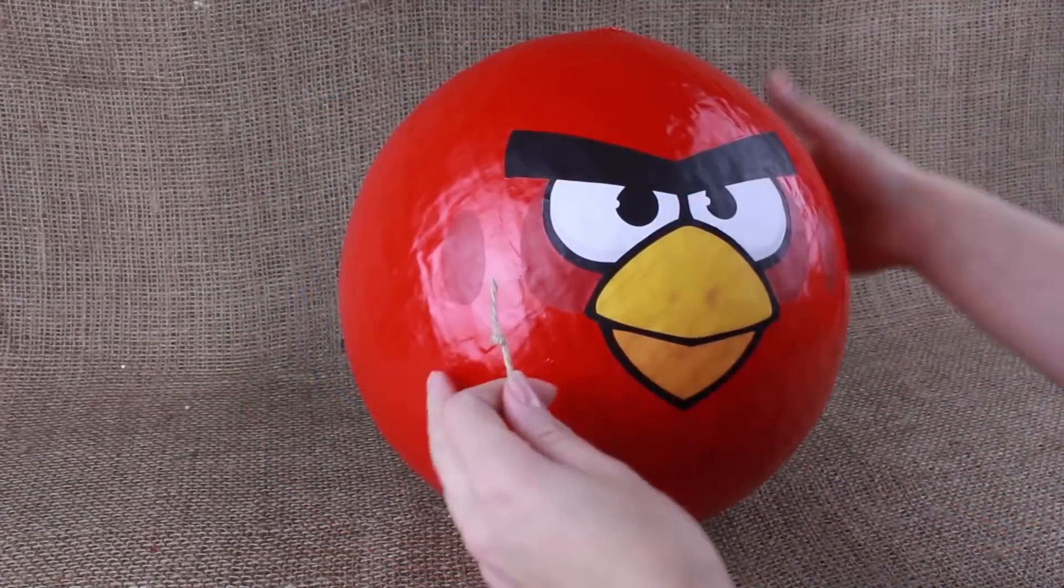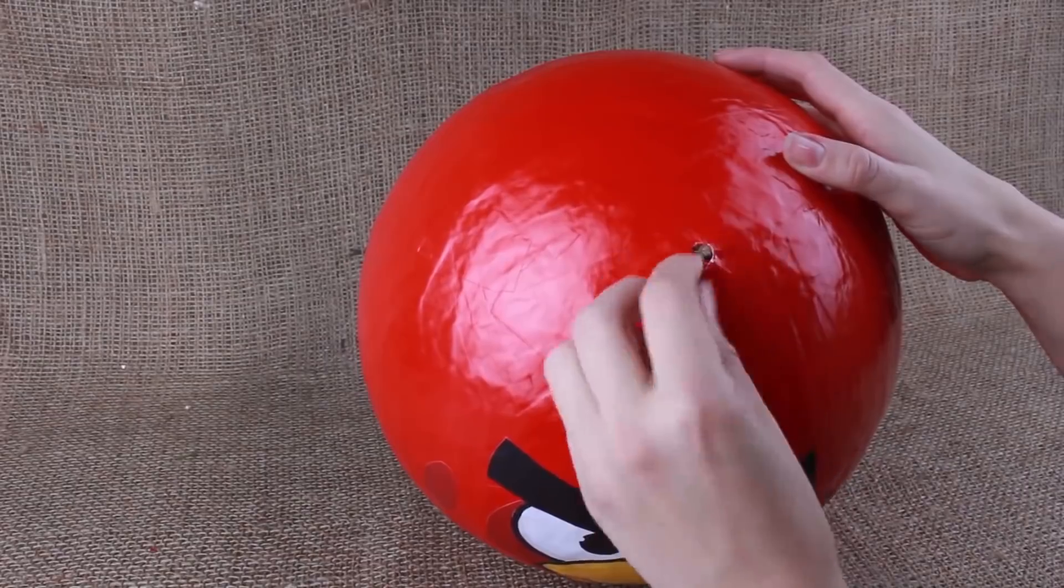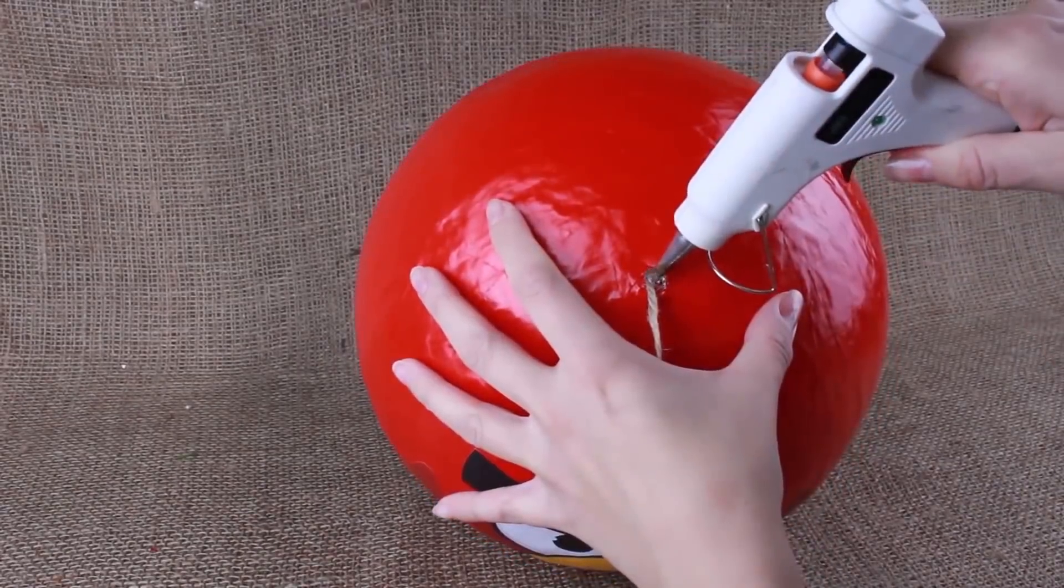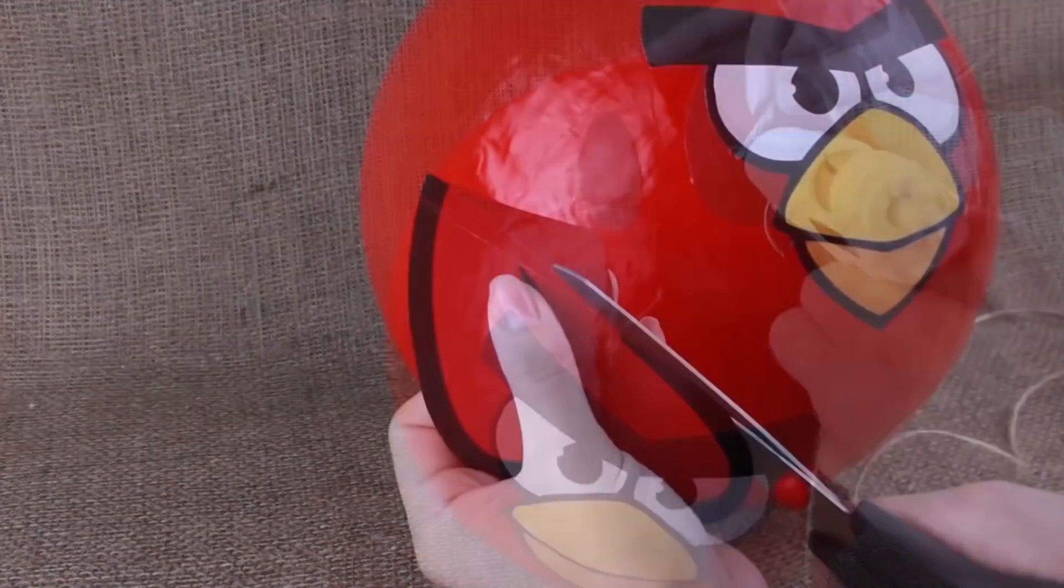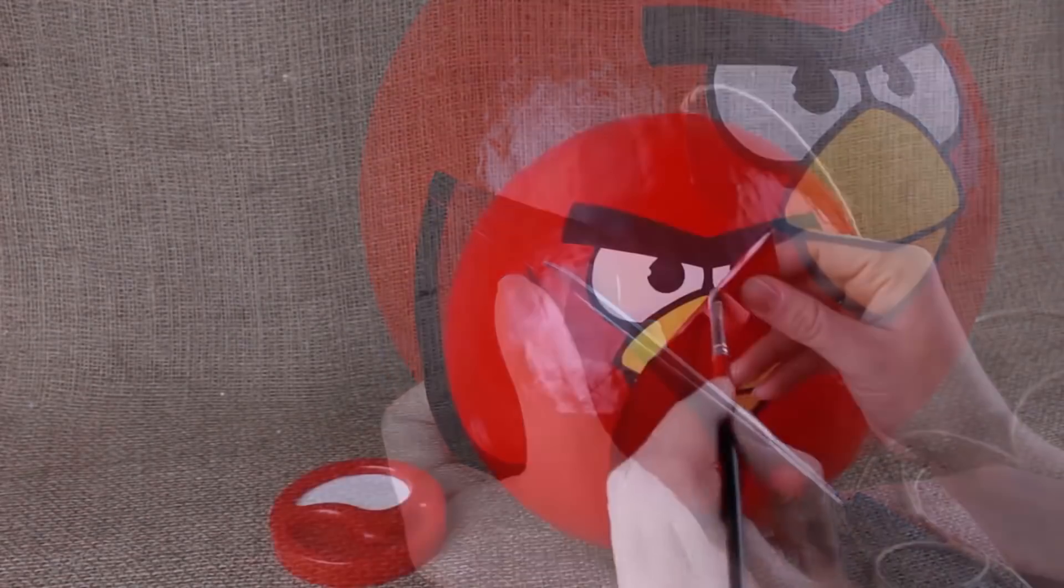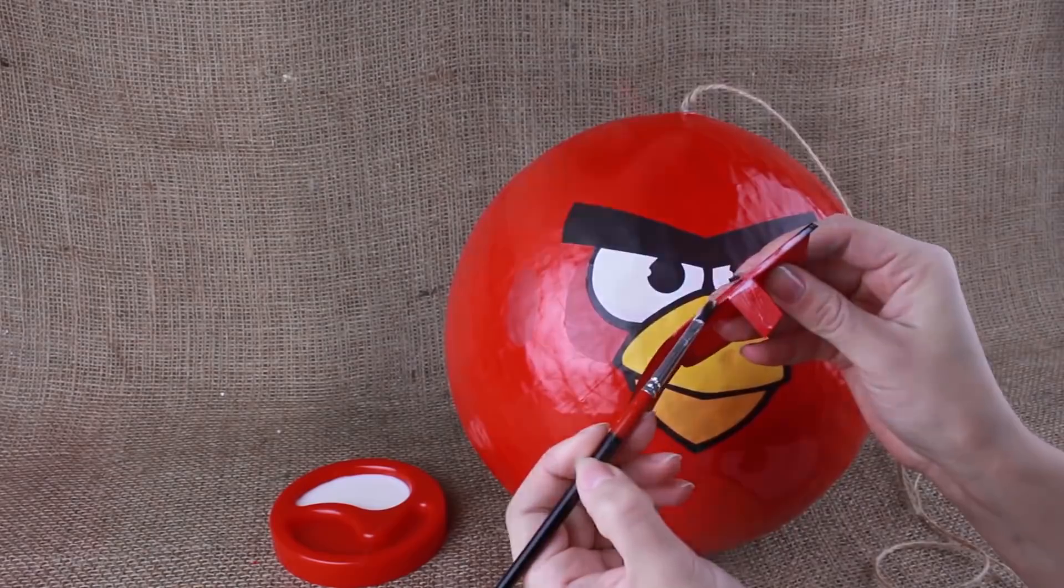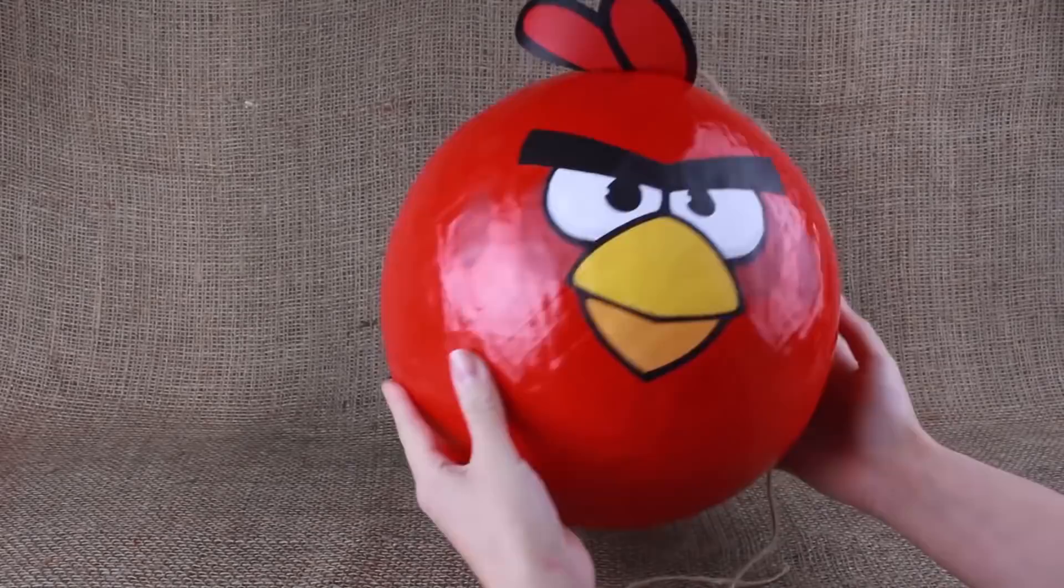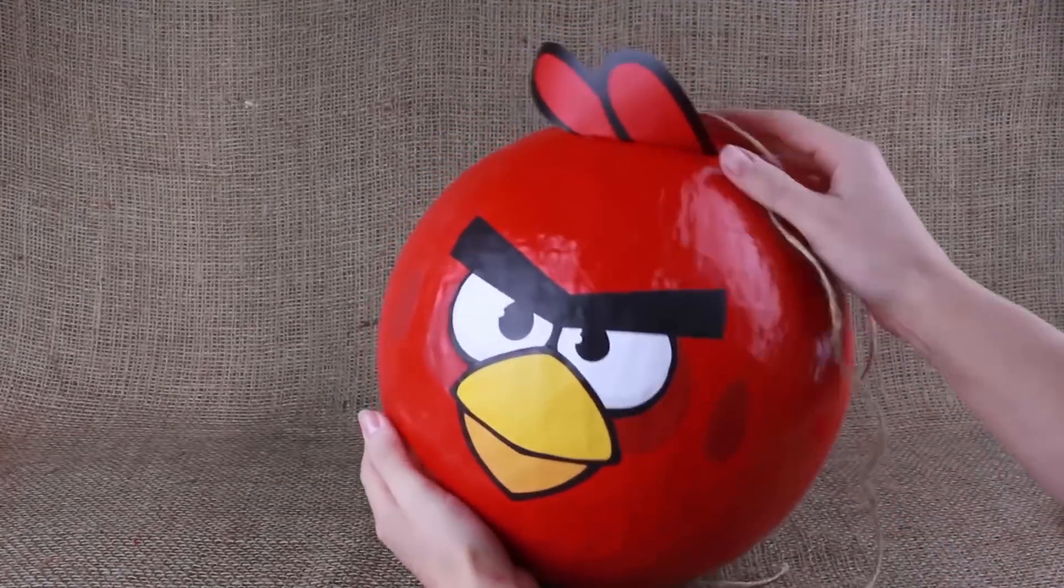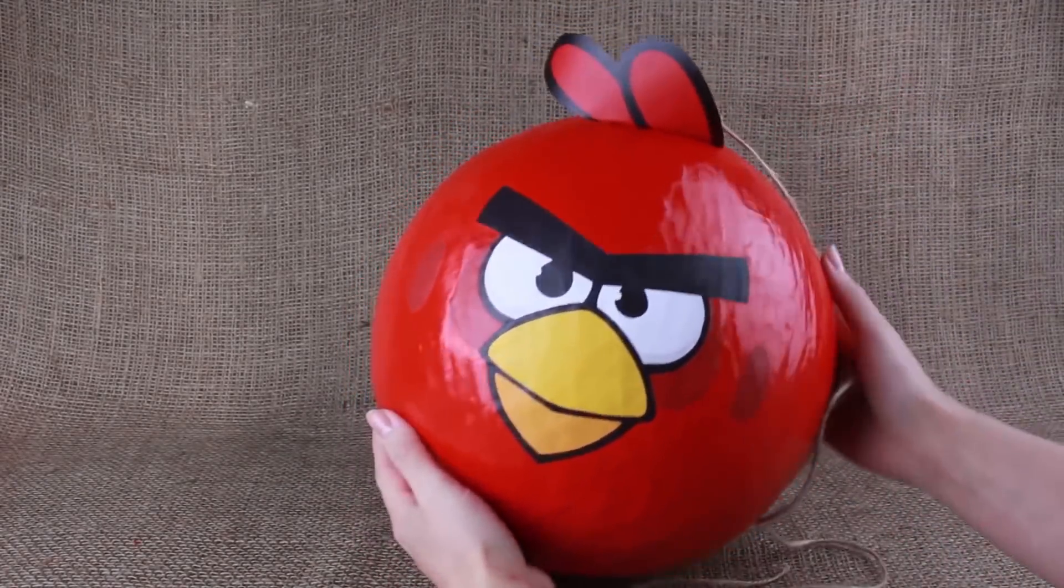Now take a string and tie a knot. Put the knot into the hole. Cover the hole with hot glue. Cut out a crest. Leave an extra fold for attachment and add some glue. Stick it to the pinata. Such an Angry Birds pinata will become the center of attention at any kid's party, making it unforgettable.